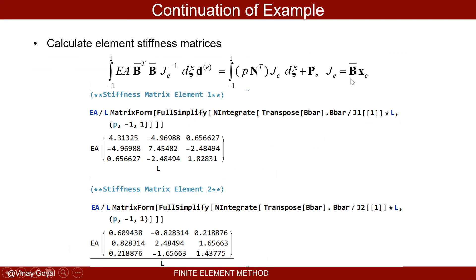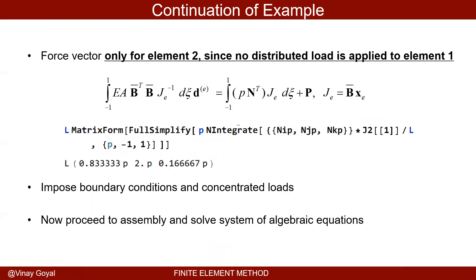We know the Jacobian for each element, the shape functions are the same, and B̄ bold is the same for every element. In Mathematica, I calculate the element stiffness matrix by integrating (EA)·B̄ bold transpose · B̄ bold / J² · J · dξ from −1 to 1, for each element using its respective Jacobian. The stiffness matrices for element one and element two are computed this way. Then we only have a force vector for element two since there's no distributed load on element one.